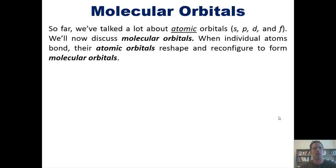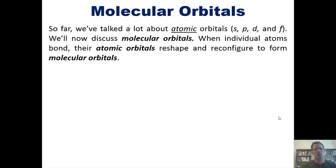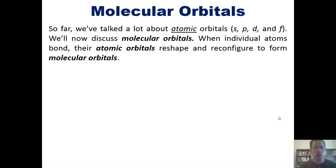So far, we've discussed a lot about atomic orbitals — that is S, P, Ds, and Fs. You guys might remember that from an earlier lecture. Now we're going to talk about molecular orbitals. As I hinted at in an earlier lecture, when individual atoms bond together, their individual atomic orbitals reshape and reconfigure to form new molecular orbitals.